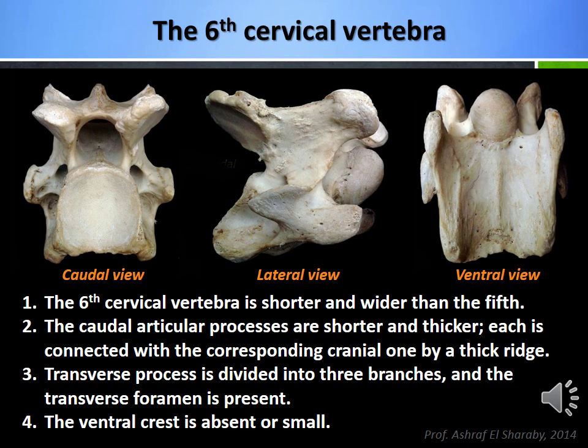Characteristic features of the 6th cervical vertebra include: 1. The 6th cervical vertebra is shorter and wider than the 5th. 2. The caudal articular processes are shorter and thicker; each is connected with the corresponding cranial one by a thick ridge. 3. The transverse process is divided into three branches and the transverse foramen is present. 4. The ventral crest is absent or small.